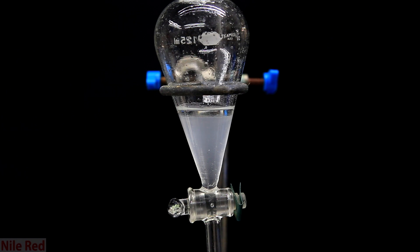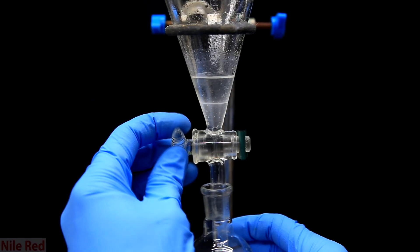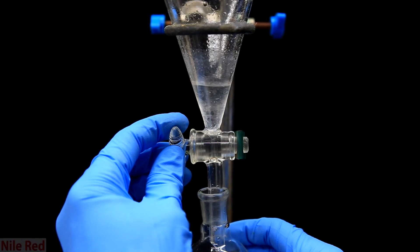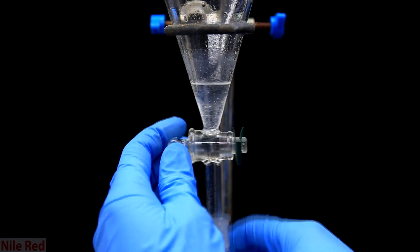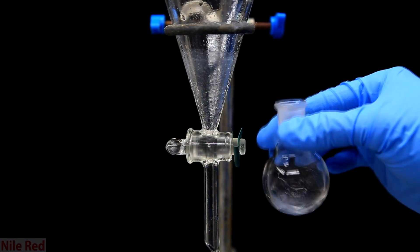The diethyl ether is immiscible with water so will also form a layer on top. Our bottom layer containing mostly salts and byproducts is transferred to a flask. The upper layer consisting of diethyl ether with our product dissolved in it is added to a different flask.